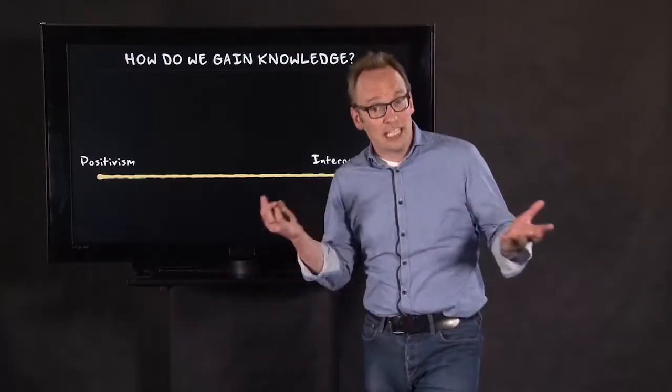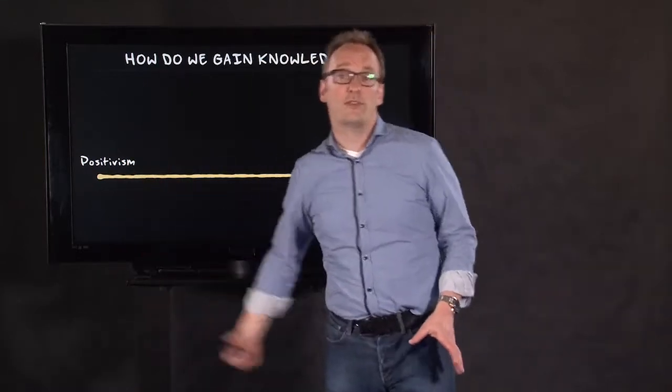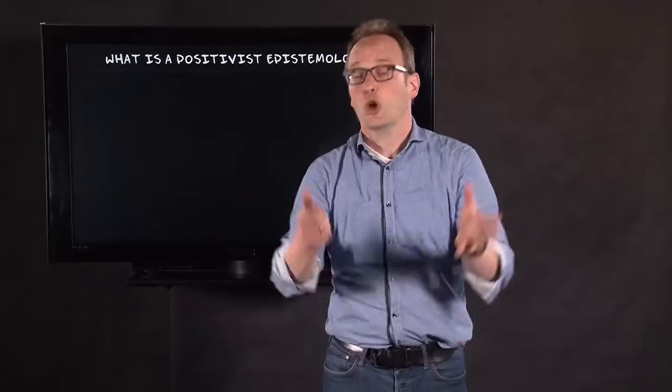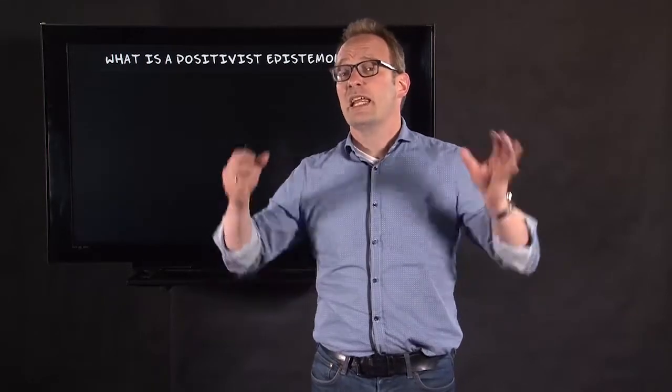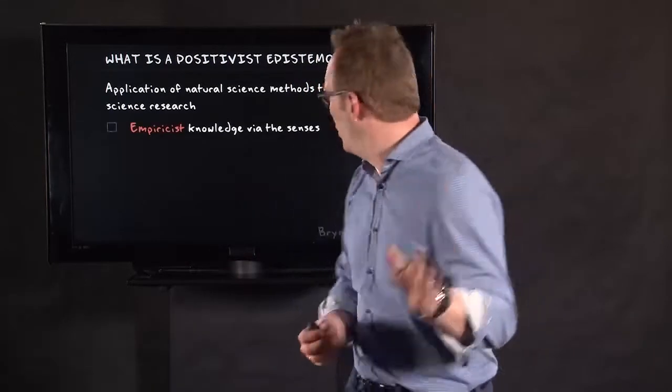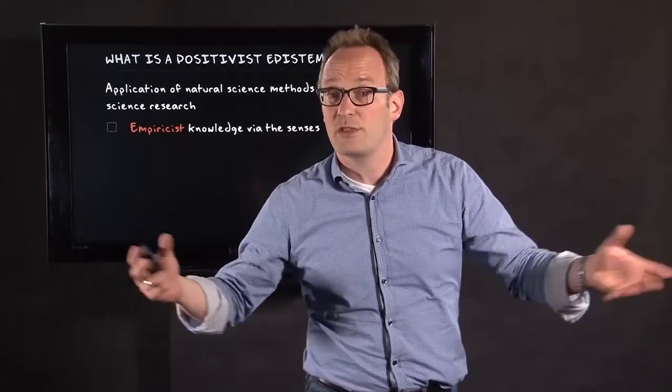And usually, in textbooks, there's a distinction made between either a positive view or a more interpretivist view. And this is one way of putting it. The core of it, at least, is that we can apply natural science methods to social sciences. And it starts with a pretty empiricist point of view. Which means all the knowledge we gain, we gain it through the senses.